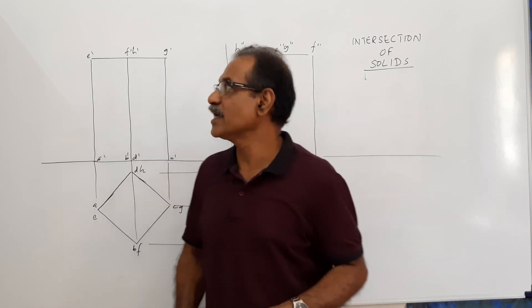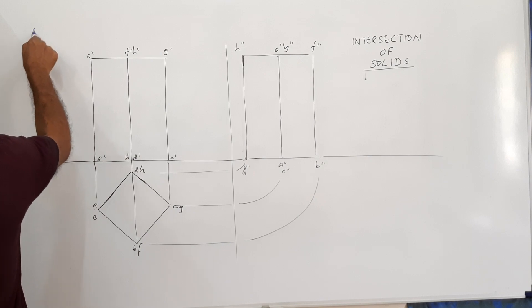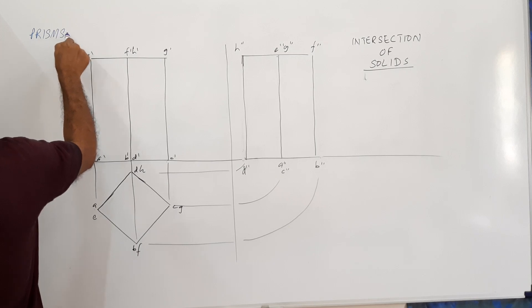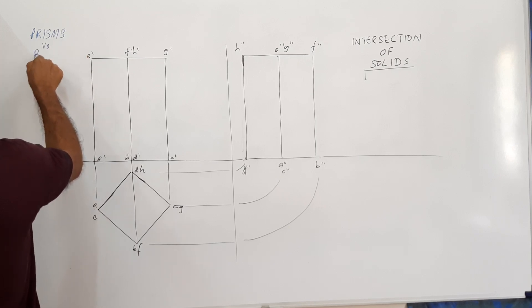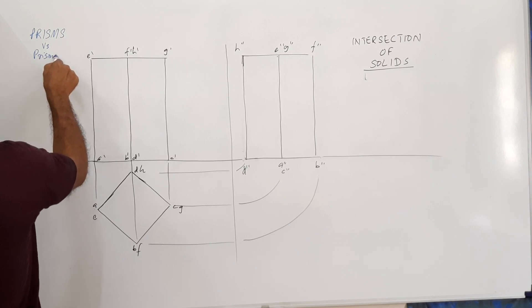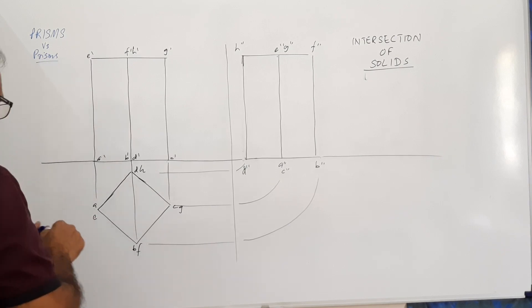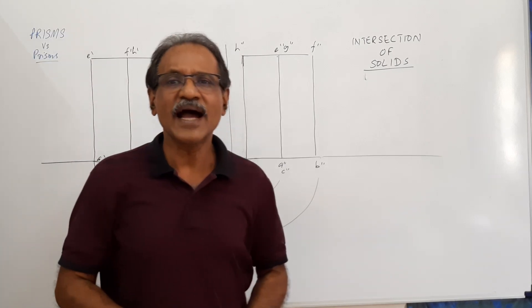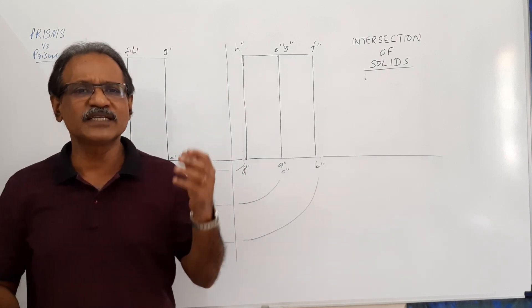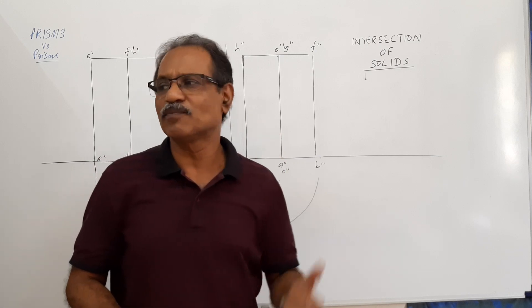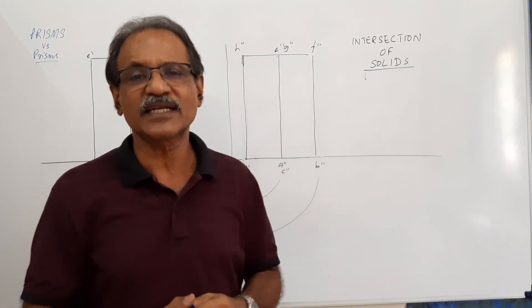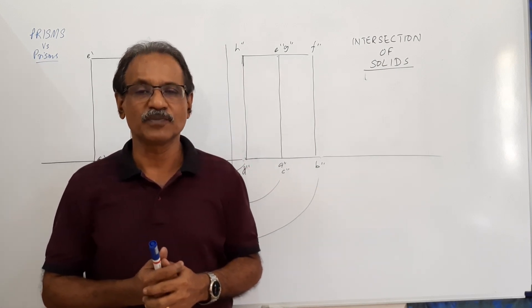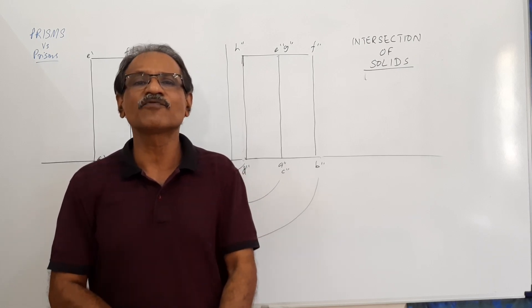We are going to study prisms intersected by prisms — one prism intersected by another prism. When we say prisms, it includes triangular prisms, square prisms, pentagonal prisms, hexagonal prisms, etc. But most commonly, square prisms appear in question papers. We will cover some of the other prisms as well.